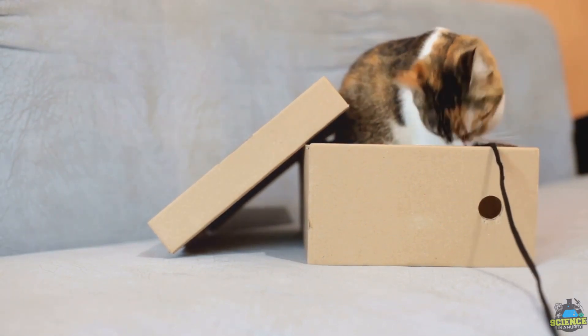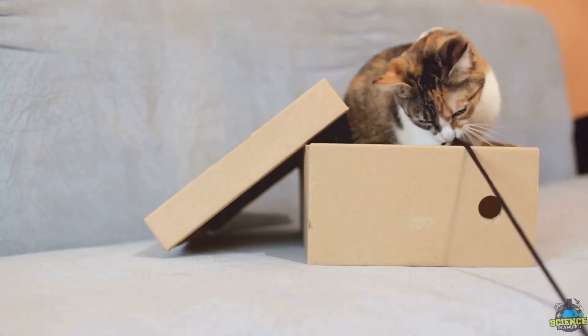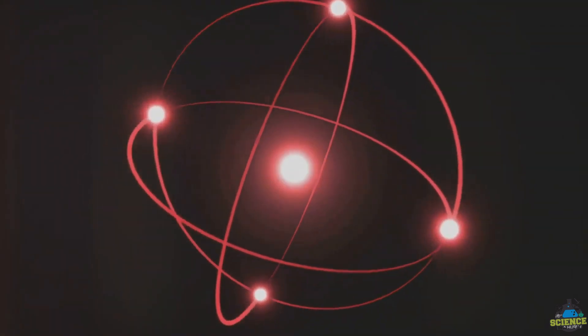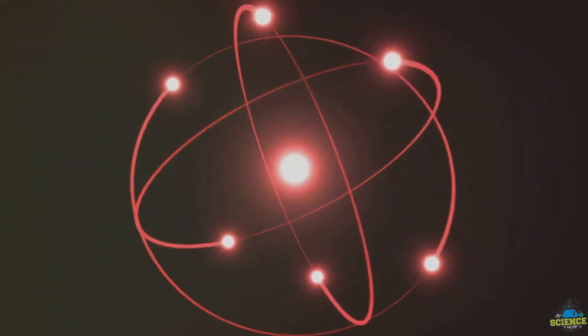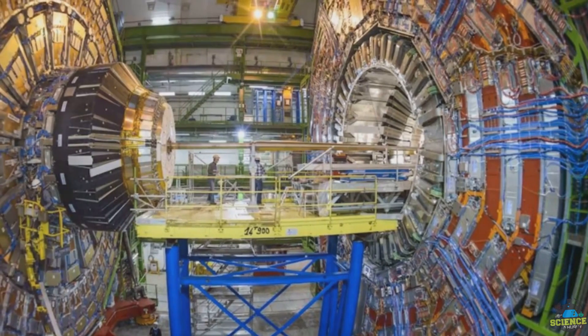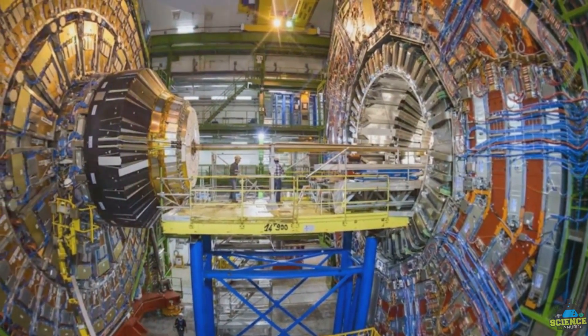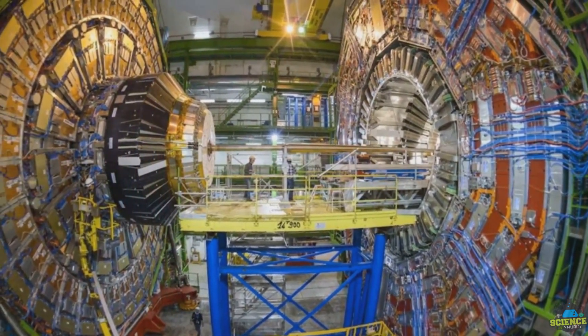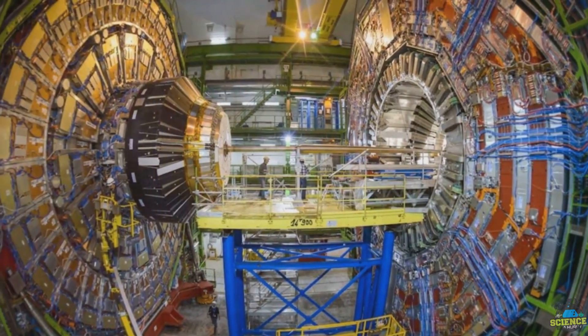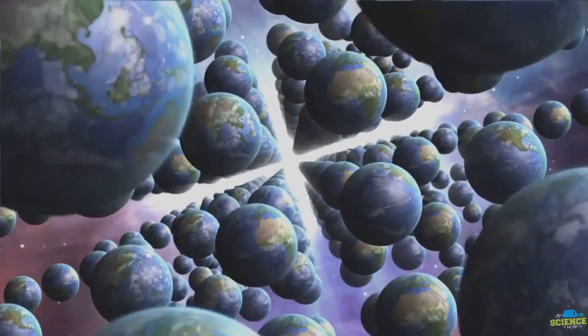Picture this, a particle spinning both clockwise and anticlockwise, simultaneously, or an electron that is both here, there and everywhere, until we measure it. Our observation, in essence, decides the fate of these particles, nudging them out of their superposition and into one particular state.